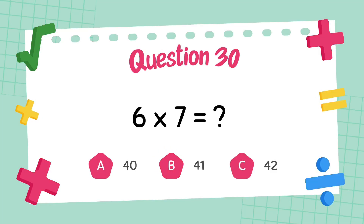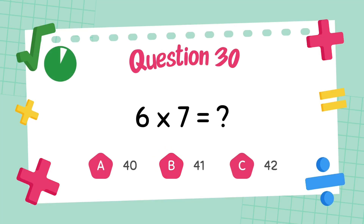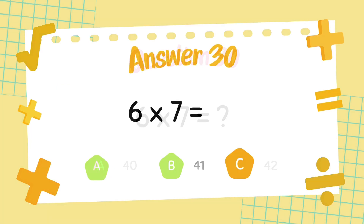What is six multiply seven? The answer is 42.